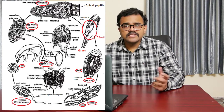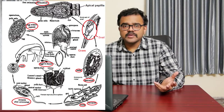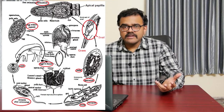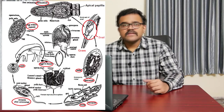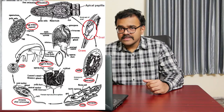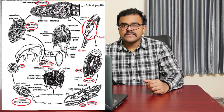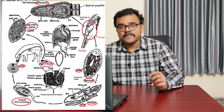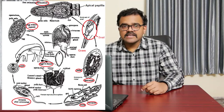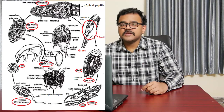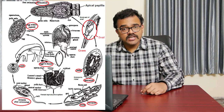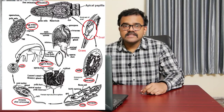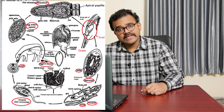The sporocyst contains several embryos; each embryo develops into another sporocyst or into a redia, which has a mouth and a gut. The sporocyst shows polyembryony. Within the redia are several embryos which develop into cercaria. The cercaria has a gut, suckers, and a tail.